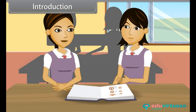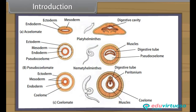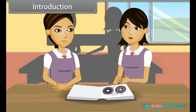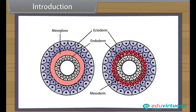On the basis of body cavity, animals are either acoelomates, e.g. coelenterates and flatworms, or pseudocoelomates, e.g. nematodes. According to presence and number of germ layers, animals are either diploblastic, e.g. sponges and coelenterates, or triploblastic, e.g. flatworms to mammals.